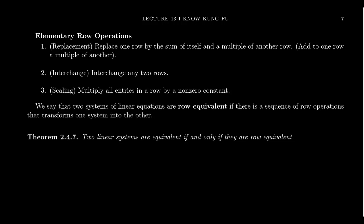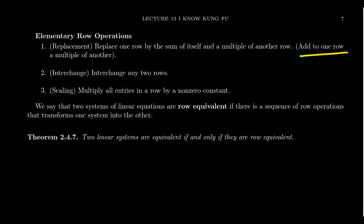What are the three elementary row operations? The replacement operation is the most complicated of the three but also the most important and the one we use most often. The replacement operation says we're going to replace one row in a matrix by the sum of itself with a multiple of another row — we add to one row a multiple of another. When we use the elimination method, we kind of did this: we'd scale a row to change the coefficients, then add them together. In essence, we were using the replacement operation and also the scaling operation.